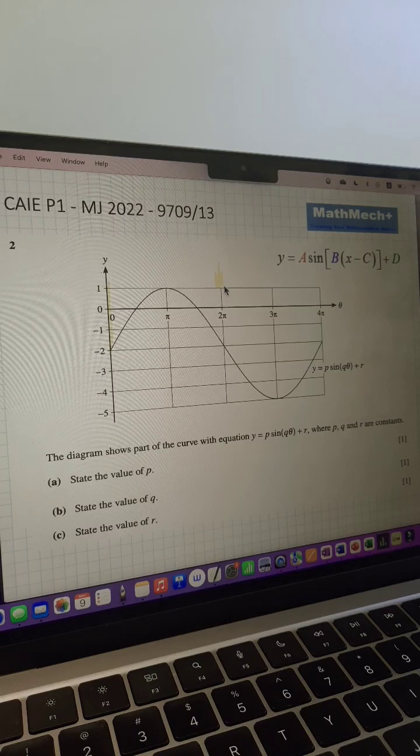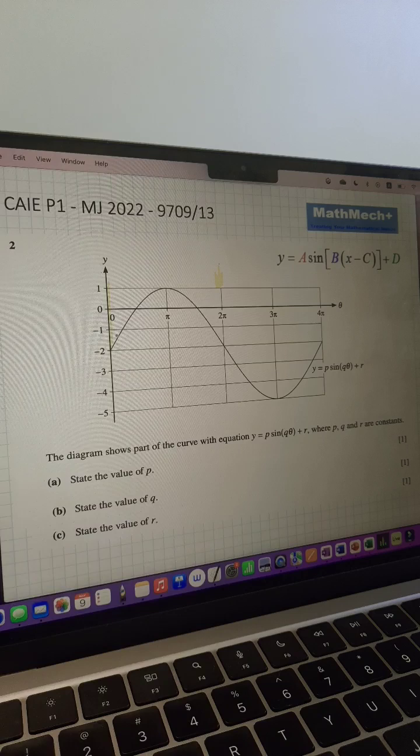So those three variables p, q, and r. p is the amplitude, which in this case is 3. You can see with the yellow line. So the amplitude is the maximum displacement of the function in a vertical sense there.